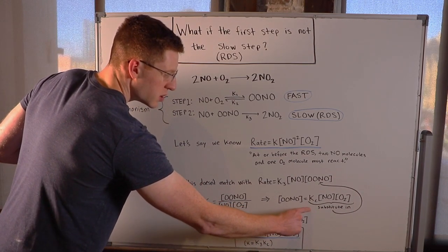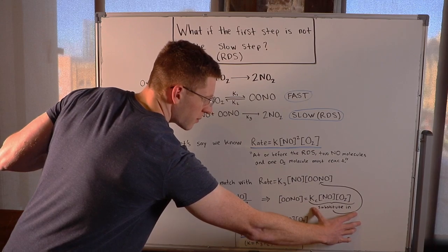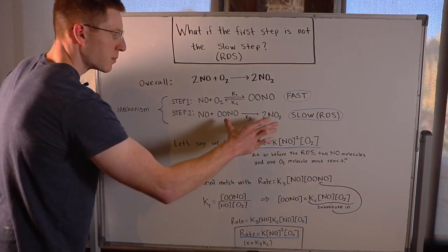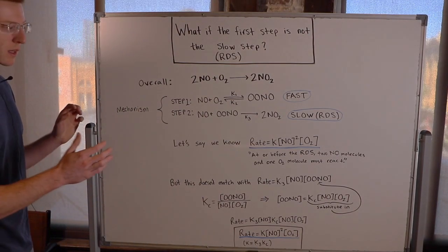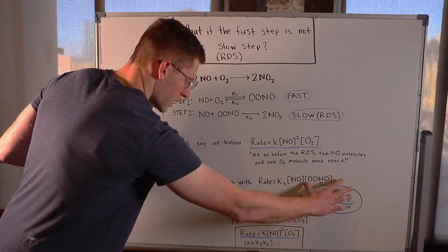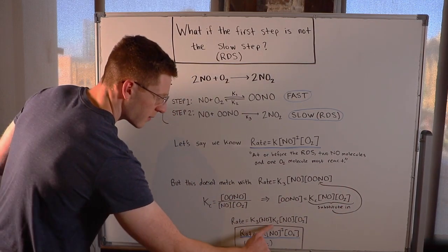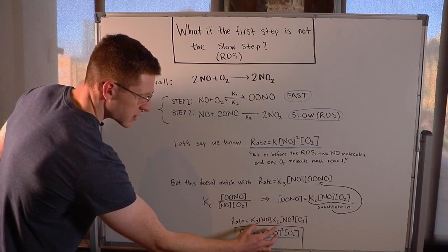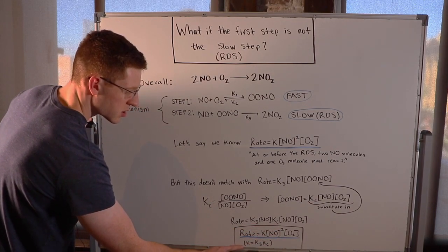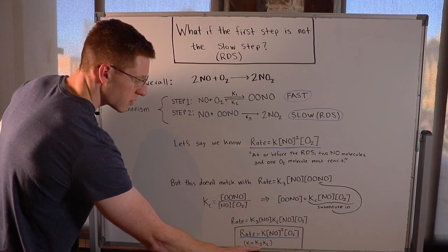And then what you can do is actually plug this entire term in for OONO in this rate law that we obtained from the slow step. So once you substitute this in for OONO, you end up with this right here. And we can condense this K3 and this Kc into a single K here and just define it as K is K3 Kc.